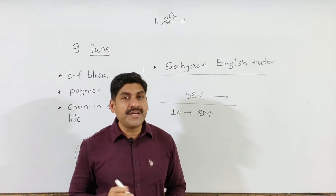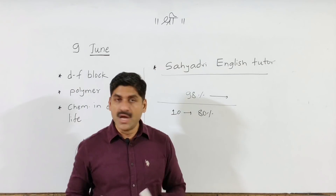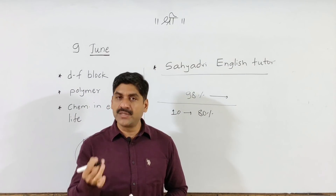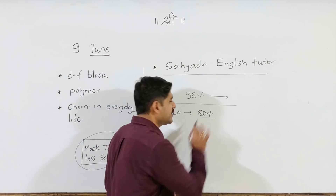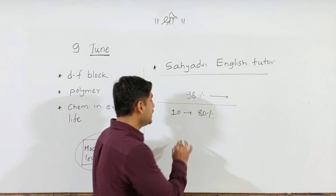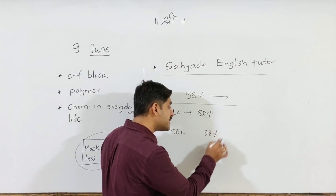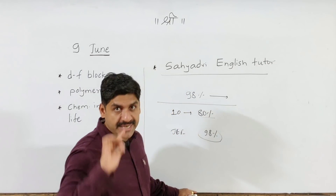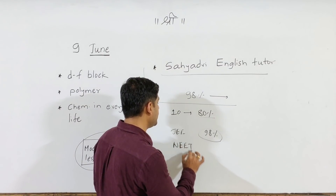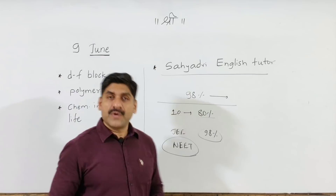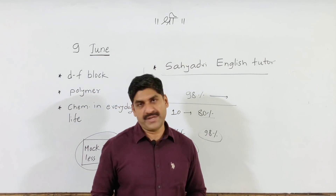Tee cha basic kaahi hi clear na ho ta — lakshat gya, kaahi hi clear na ho ta. Maja basic clear na ho ta. Ekdom weak maja algebra, geometry, science 1, science 2. Fakt 80% mark ho te. But JEE cha first attempt madhe tee cha score ho ta 98 percentile. 98 percentile. And tee sadhyya tiyari karte NEET chi. And if 11, 12 la tila koanthahi coaching available na hai.